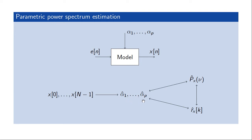Once we have these parameters, we know everything about the model, since we know the parameters and we know the driving process, and we can therefore, at least in theory, compute the properties of the stochastic process x of n. Knowing the parameters will allow us to estimate or compute the power spectral density or the autocorrelation. And since we know a lot about filters, we'll generally assume that the model is in the form of a filter, and that these parameters are parameters of that filter.